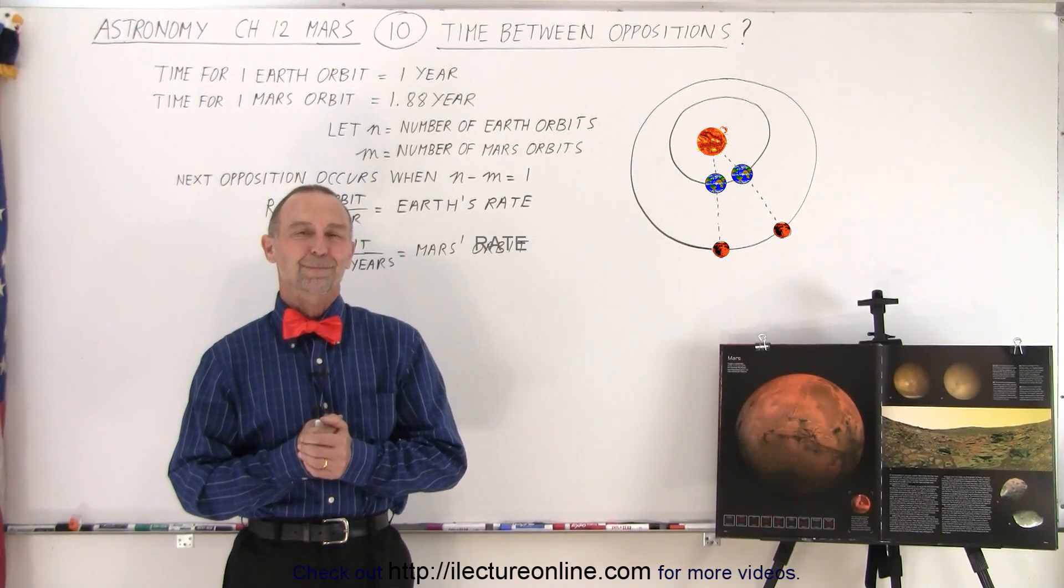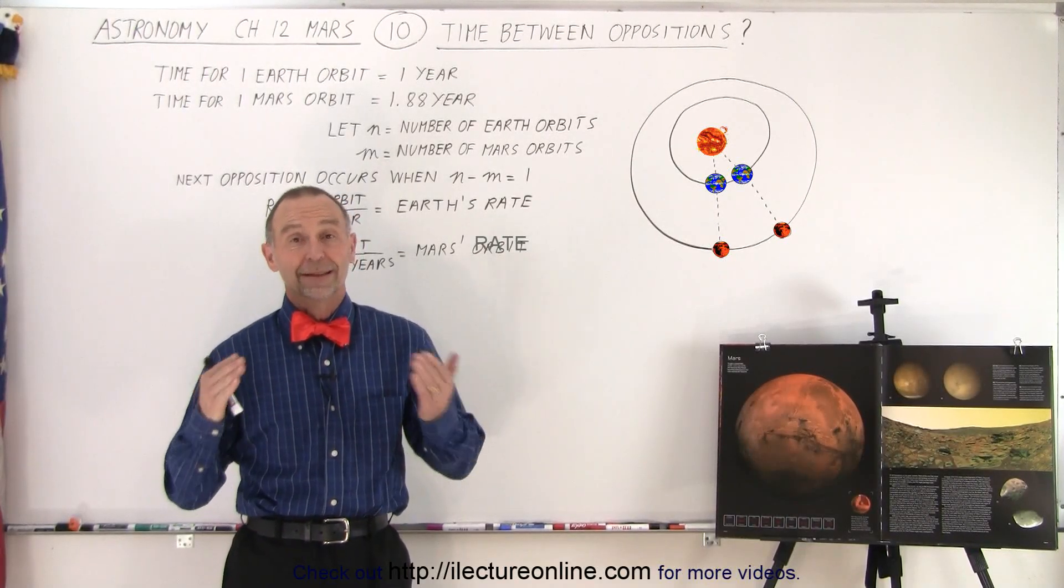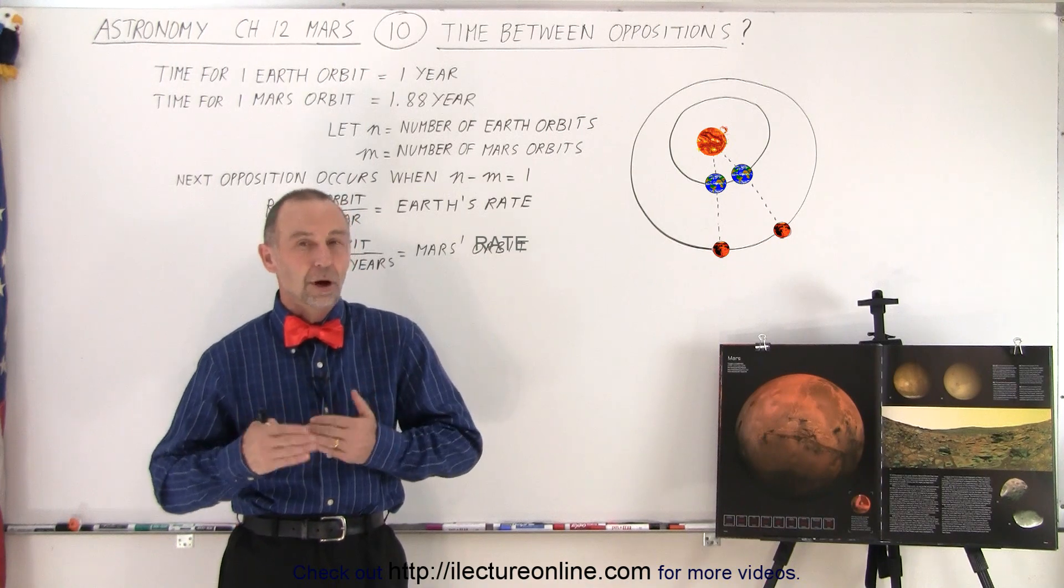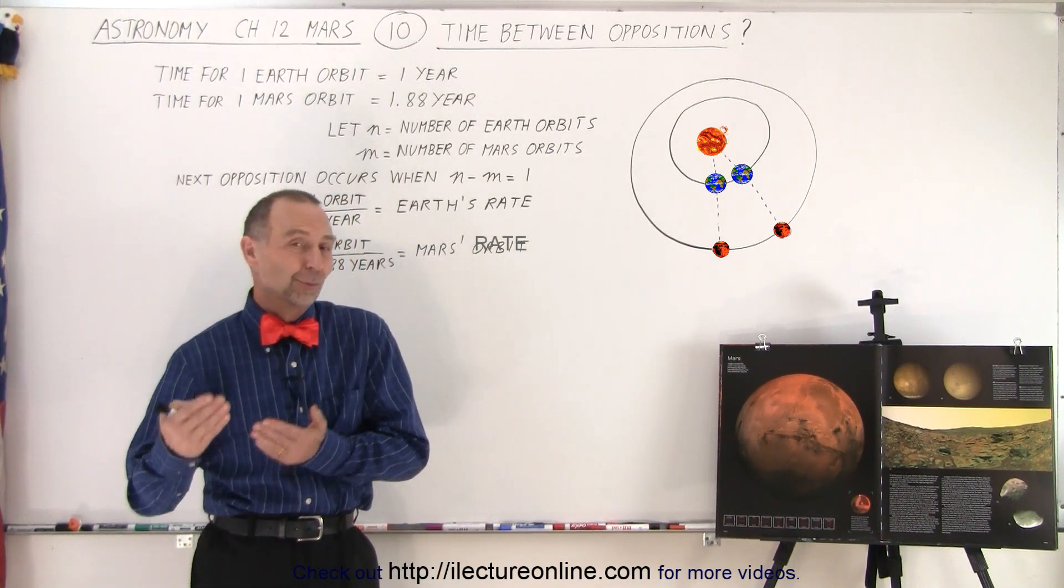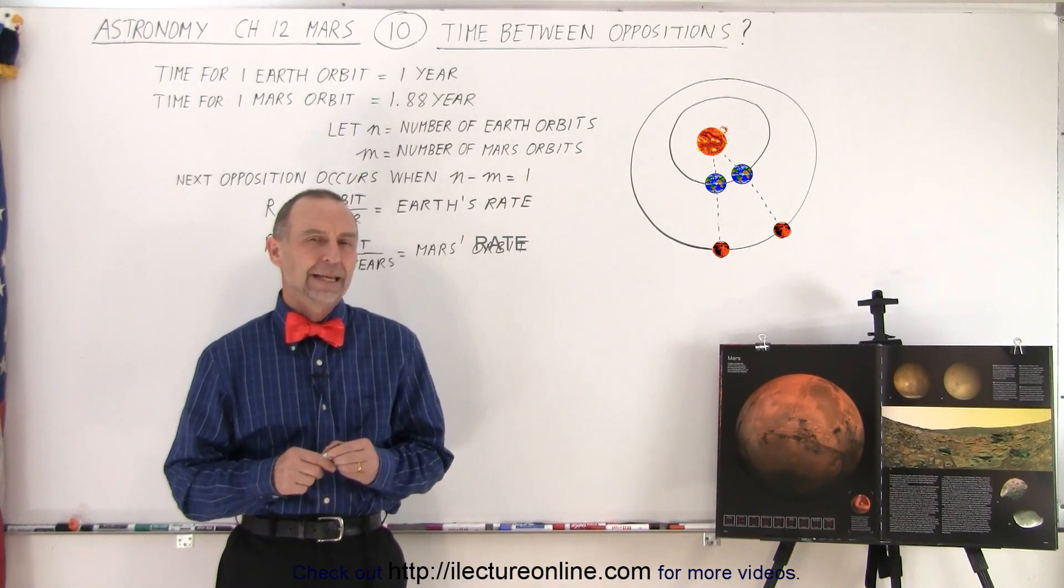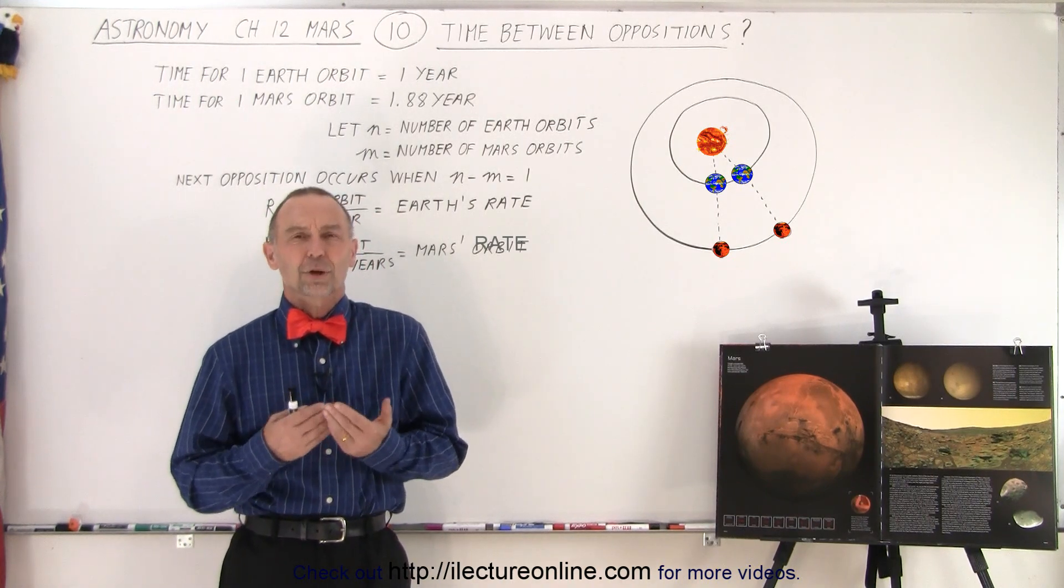Welcome to our lecture online. In the previous videos we learned that at times Mars and Earth are at opposition, or better said, Mars is at opposition relative to Earth and Sun. Now the question is, how often does that occur?